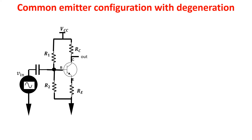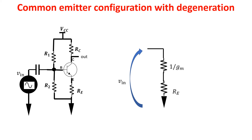Let's see the configuration which is the basis of the differential amplifier: the common emitter with degeneration, so with an emitter resistor. We neglect the biasing and we want to find the gain of this configuration using a simplified small signal model. The input voltage VIN is divided between two resistances RE and 1/GM, which is the emitter resistance seen from the emitter of the transistor. This is a simple voltage divider, so the voltage on the degeneration resistor and the voltage on the emitter junction are found accordingly.